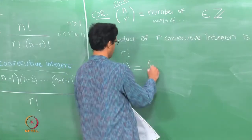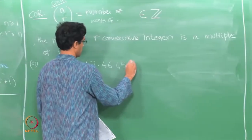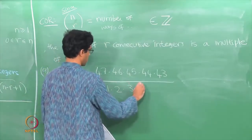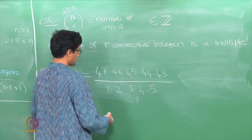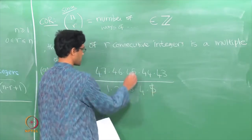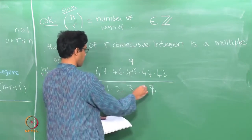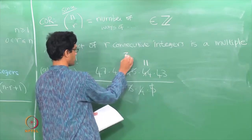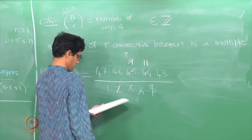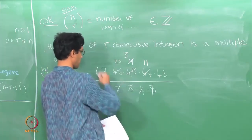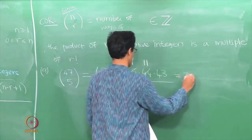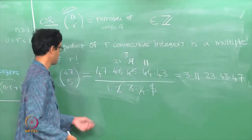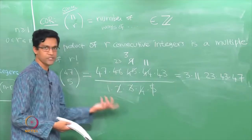For example, 47 choose 5 is the product of five numbers — 47, 46, 45, 44, 43 — and the claim is that this product is always divisible by 5 factorial. To see why: the 5 cancels the 45 leaving a 9, the 4 cancels 44 giving 11, the 3 cancels off the 9 giving 3, and the 2 cancels off 46 giving 23. The final answer after all cancellations is 47 × 23 × 3 × 11 × 43, which is certainly an integer.